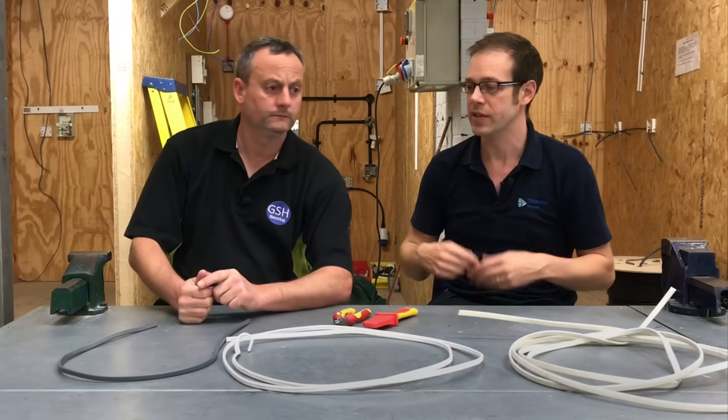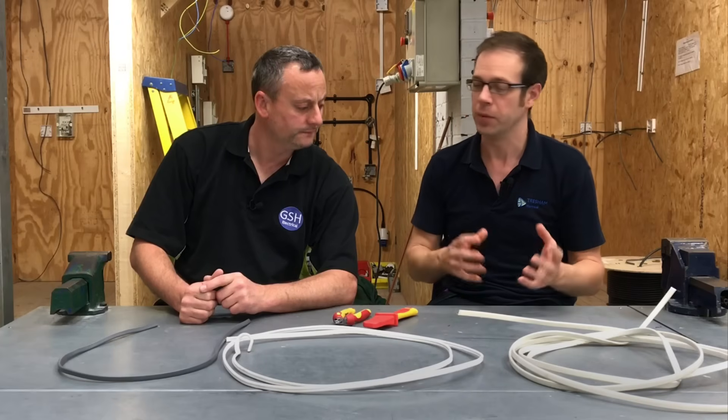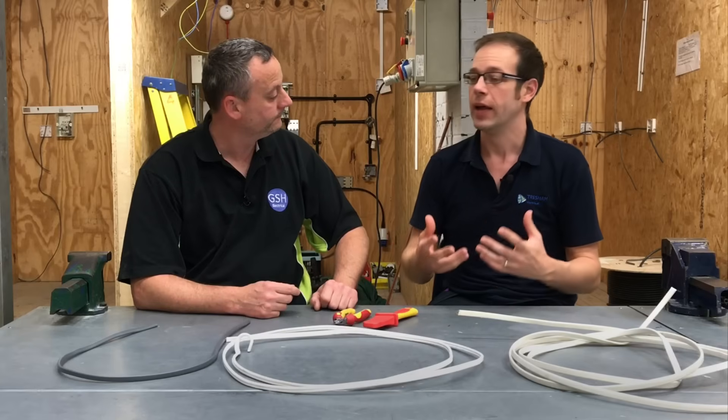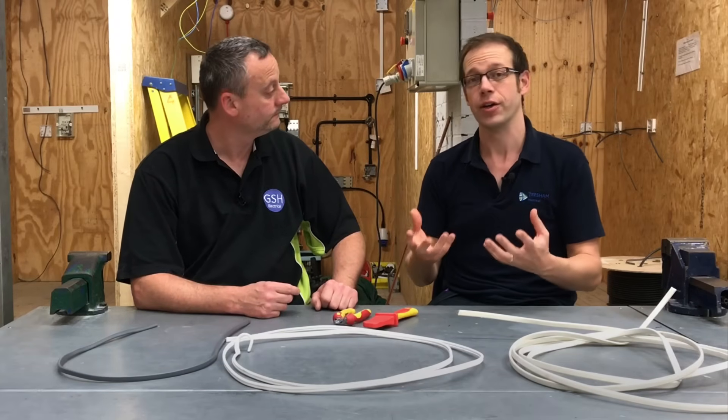And it also produces a type of halogen gas called hydrogen chloride. So chlorine is one of the halogen gases, and when it combines with the halogen in the cable, it makes this gas. Now the gas is very dangerous for humans to breathe in. And also, if it combines with moisture in the atmosphere, it actually creates hydrochloric acid.